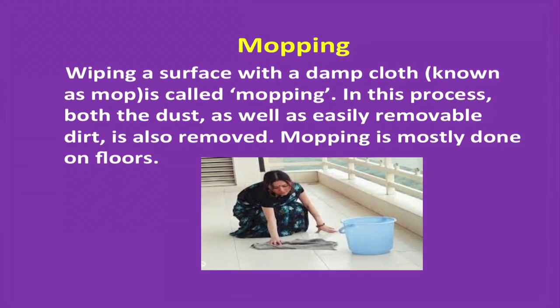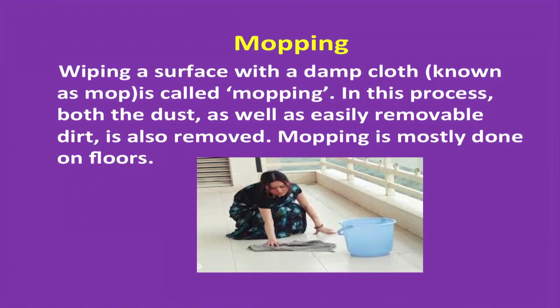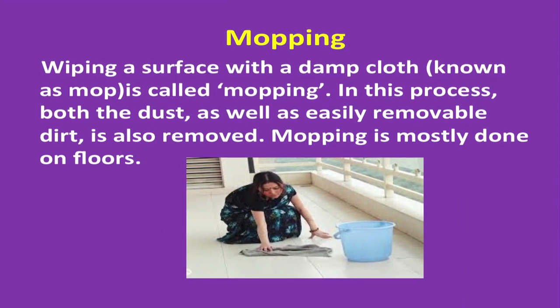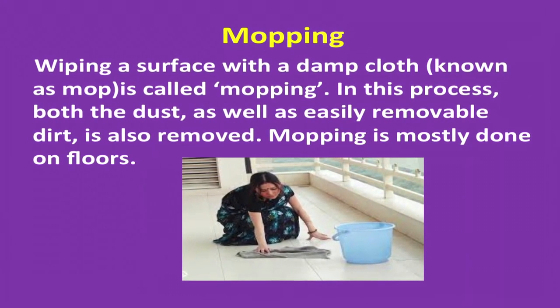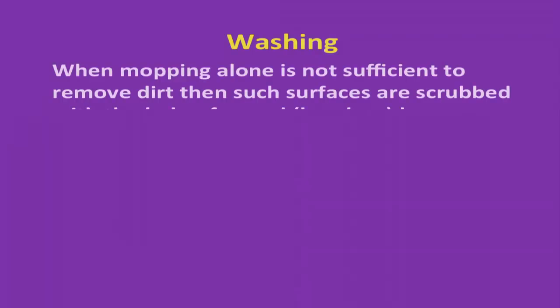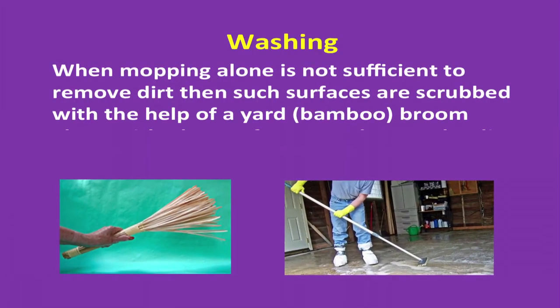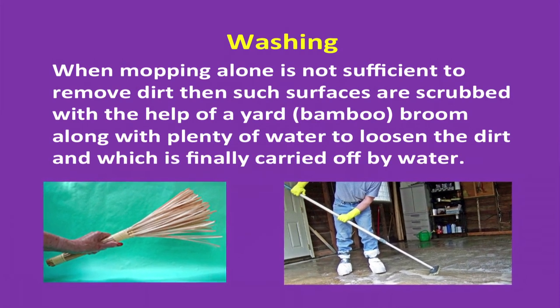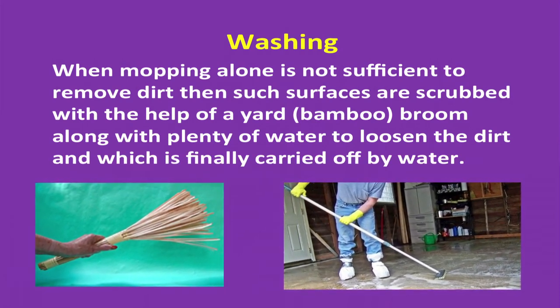Wiping a surface with a damp cloth known as a mop is called mopping. In this process, both the dust as well as easily removable dirt is also removed. Mopping is mostly done on floors. When mopping alone is not sufficient to remove dirt, such surfaces are scrubbed with the help of a yard bamboo broom, along with plenty of water to loosen the dirt, which is finally carried off by water.